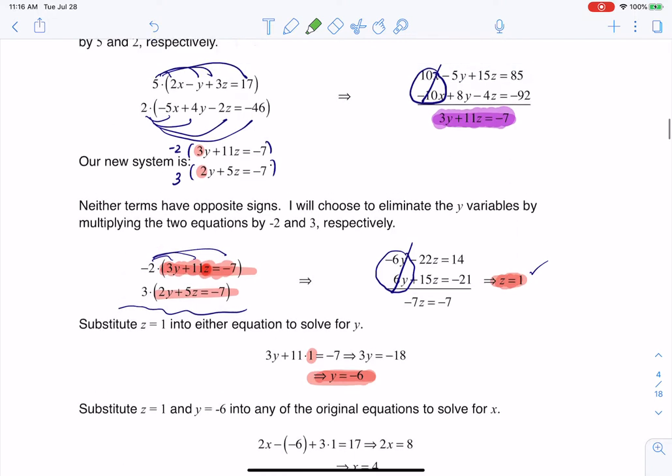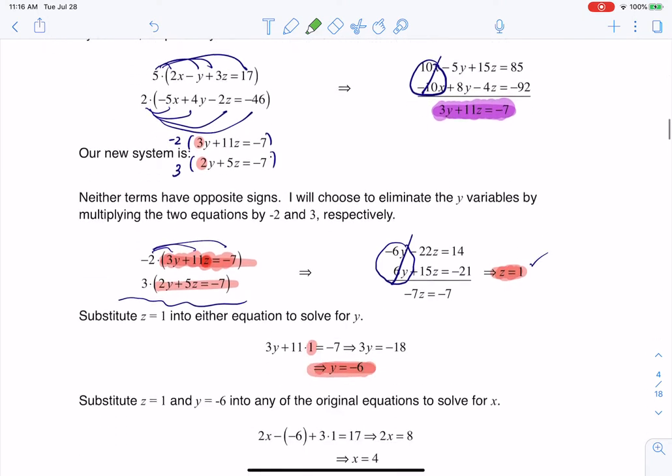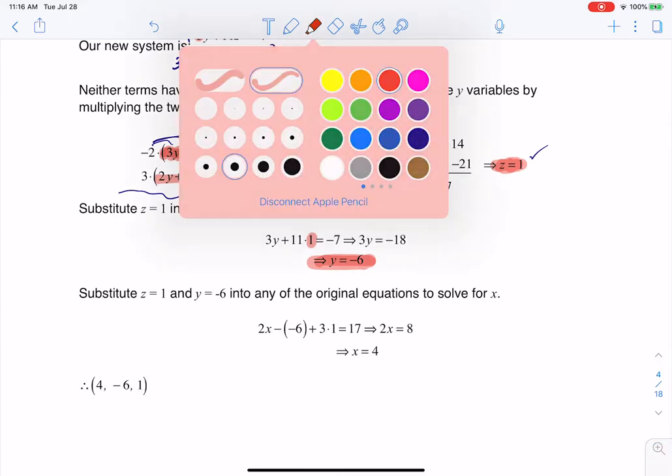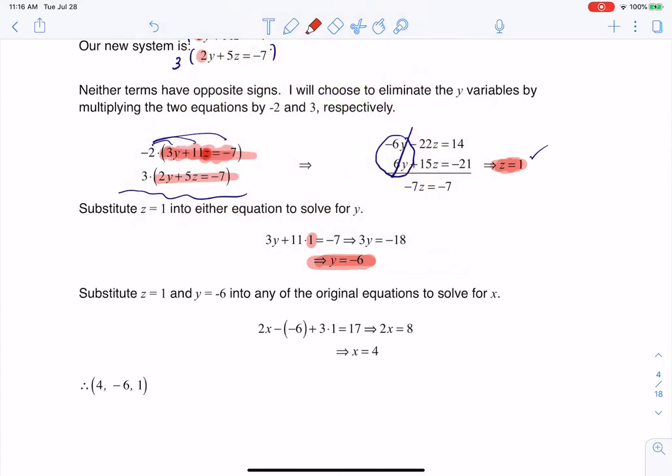Actually, let me check which one I opted for. It looks like the first one, yes. So when I substitute in my y and z values, I get x equals 4.